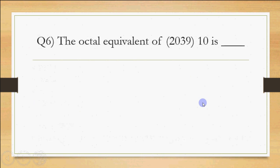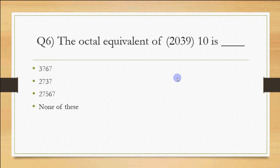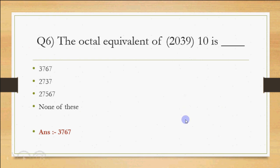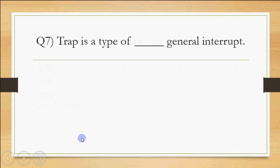Question 6: the octal equivalent of 2039 (decimal). Keep dividing by 8, collect the remainders, and write them in reverse order to get the octal equivalent. The answer is 3767. This has been discussed multiple times before, so try to solve it yourself and verify you get the same answer.